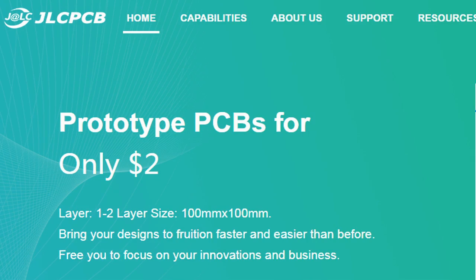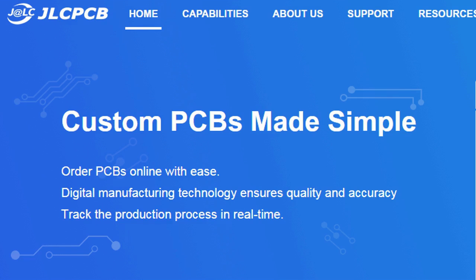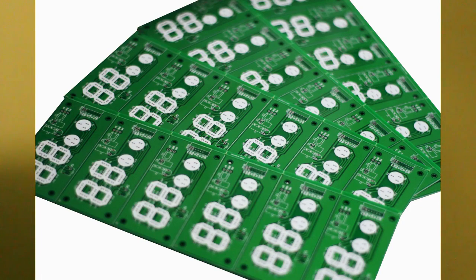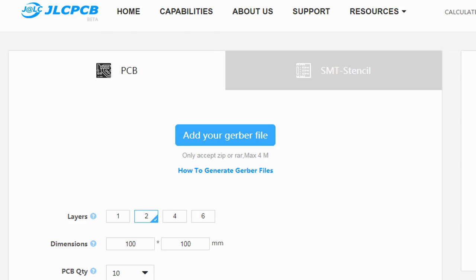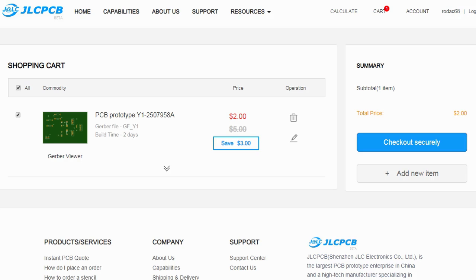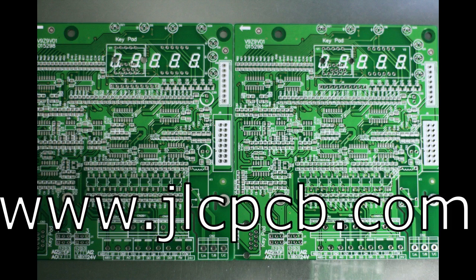This video is sponsored by JLCPCB. JLCPCB is a company that makes excellent quality PCBs at an unbeatable price. You can order boards online in minutes. After registration, upload your Gerber files, select the PCB properties, select the payment method and place your order. Best price and quality for all your PCB needs.